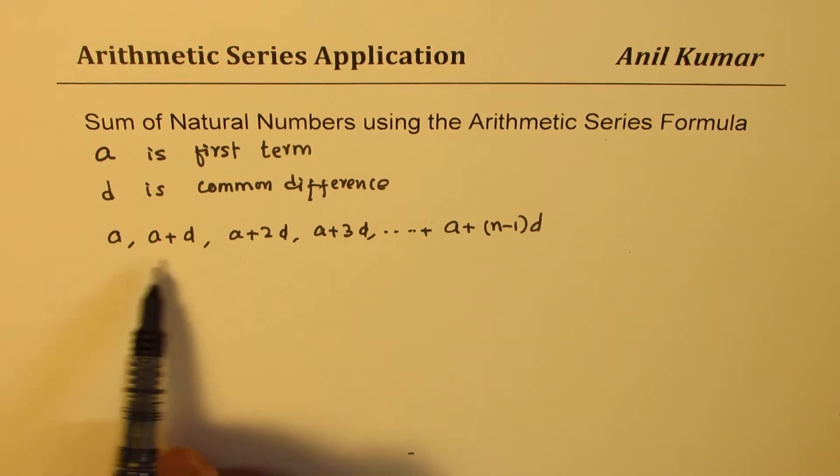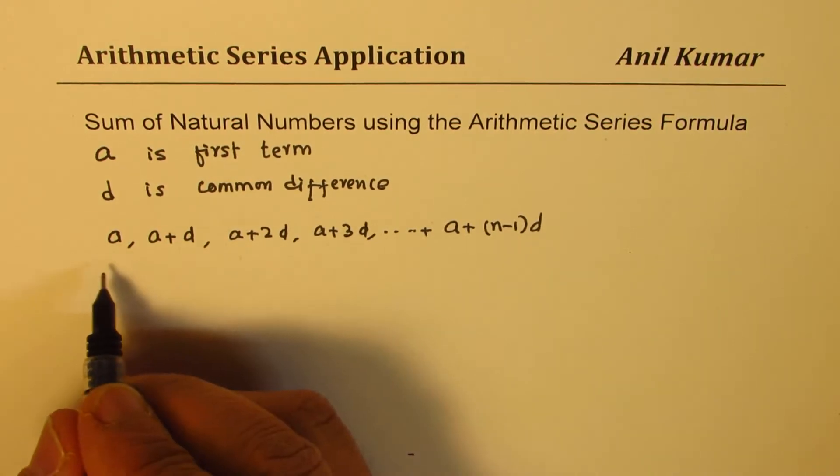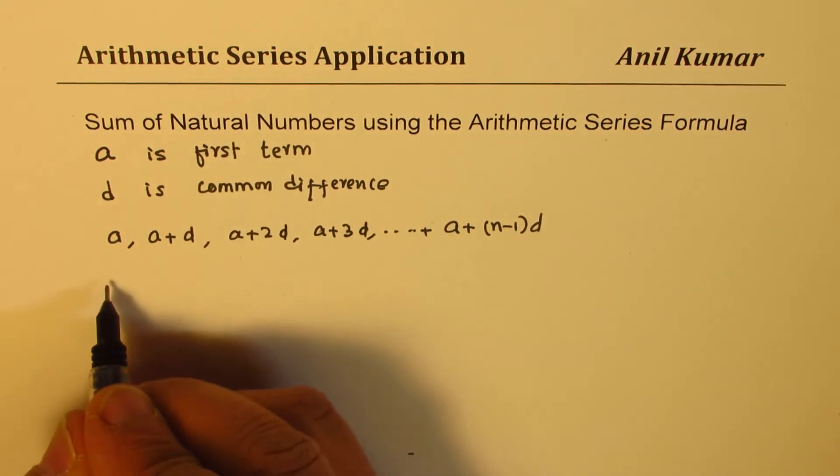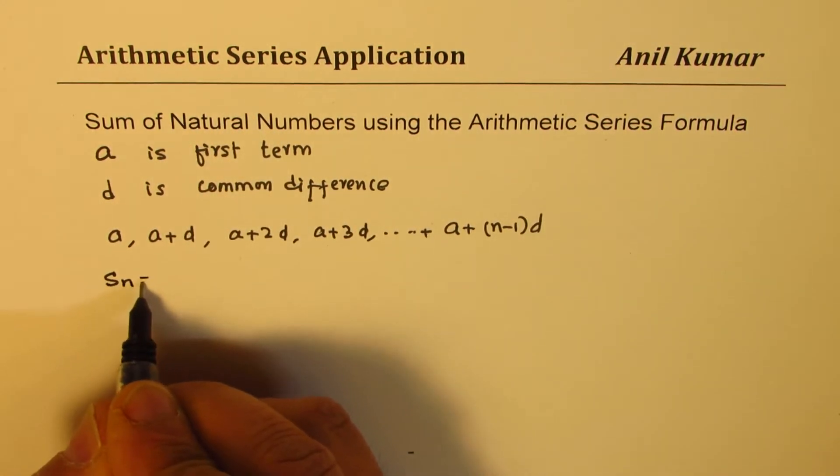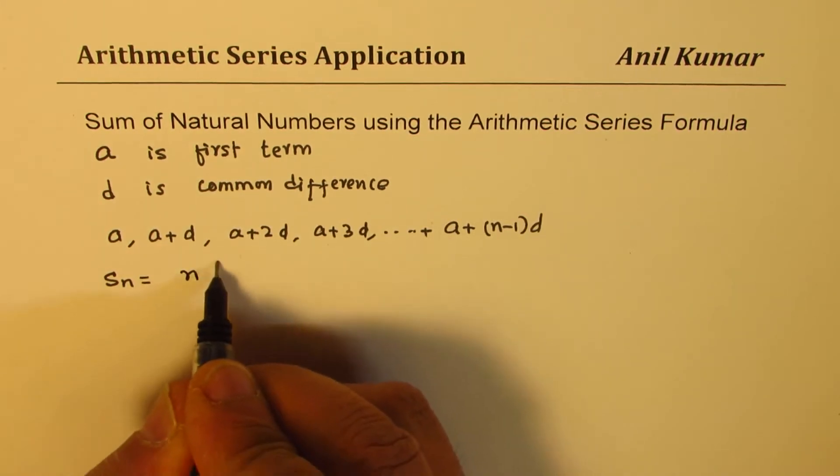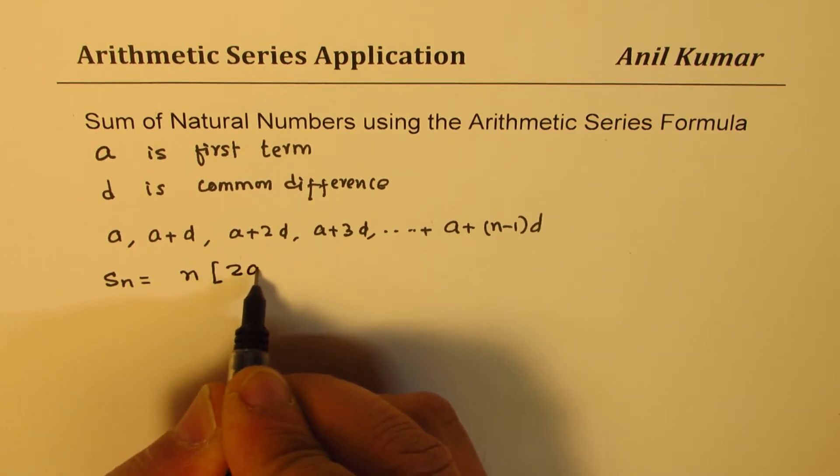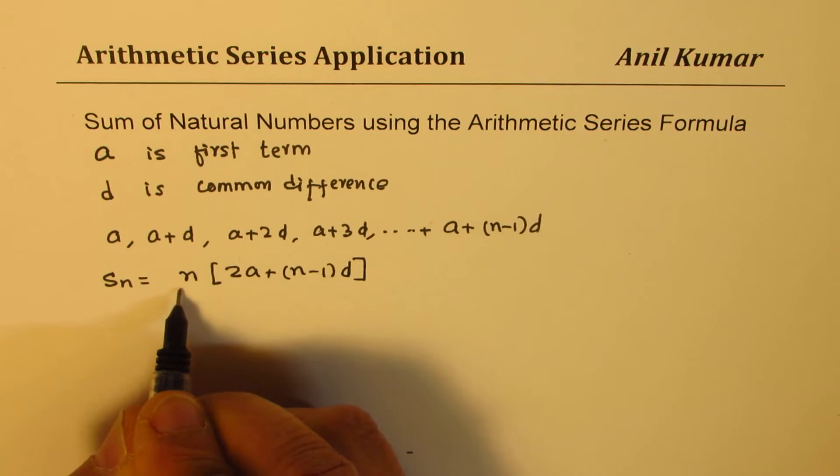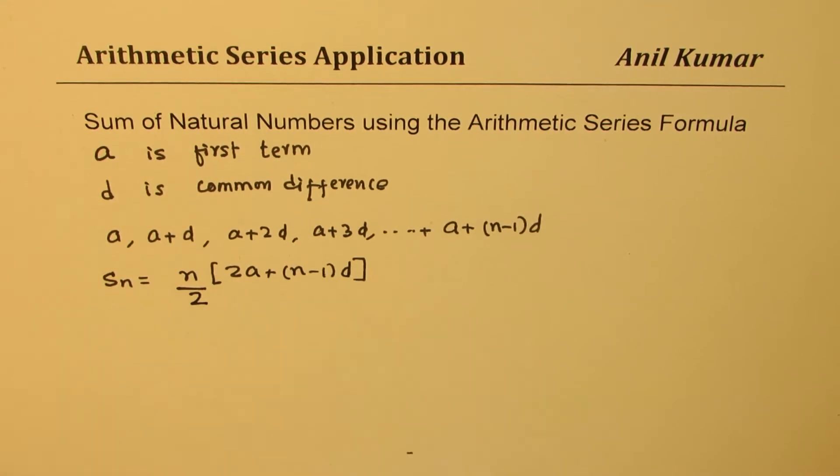We also learned how to add up the whole sequence. When you add up a sequence, it becomes a series. Sum of n terms, we actually learned two formulas. One was related with the number of terms and A and D, which was n times 2A plus n minus 1 times D over 2. This is one formula which we learned.